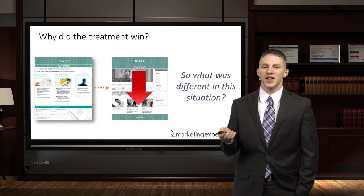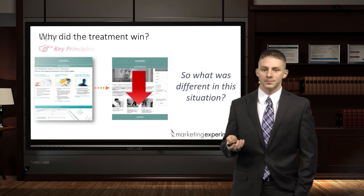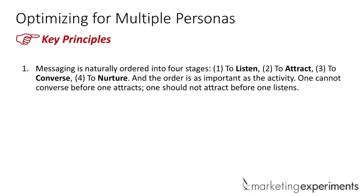First, I'd like to give you a framework for what we've discovered, and it's this: messaging is naturally ordered into four stages — to listen, to attract, to converse, and to nurture. The order is just as important as the activity. For example, you can't converse before you attract, and you can't attract before you listen.